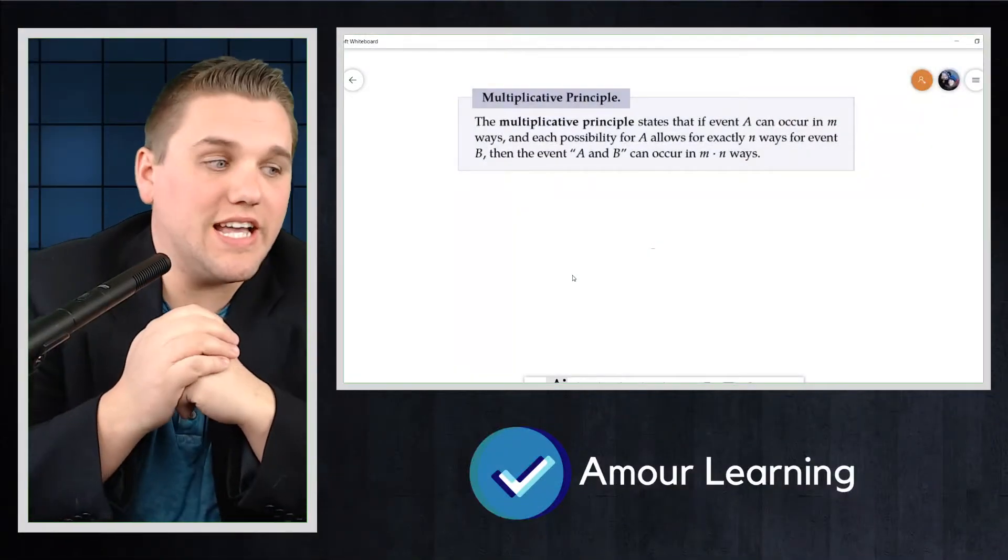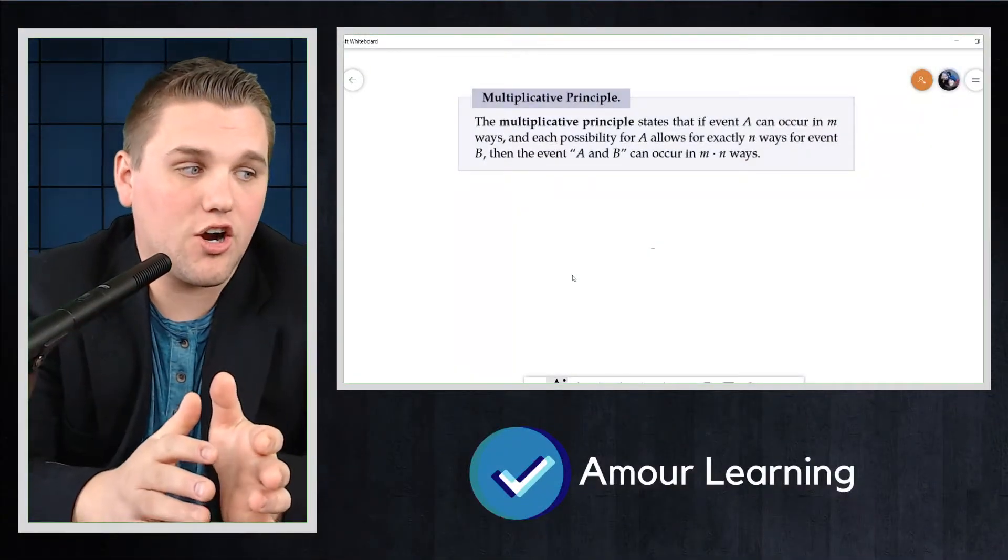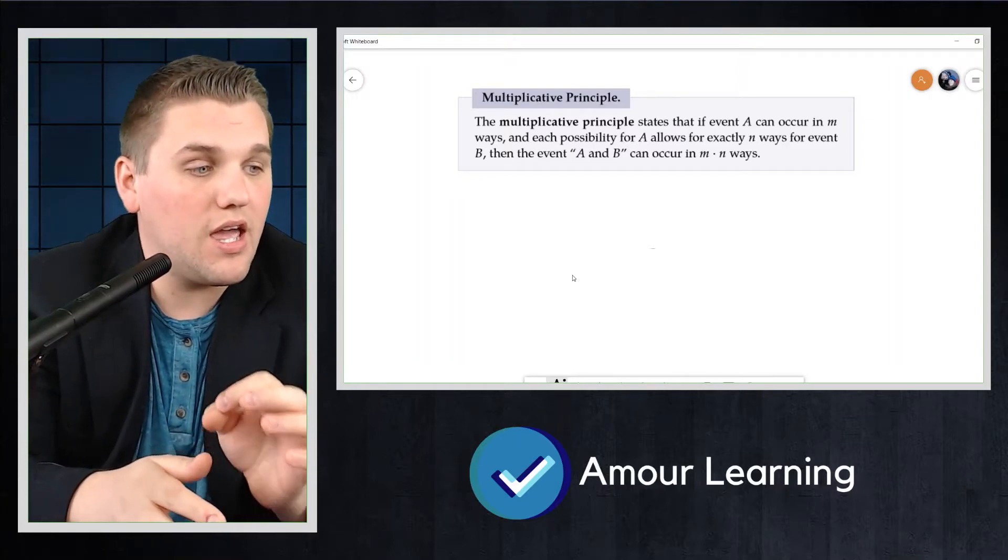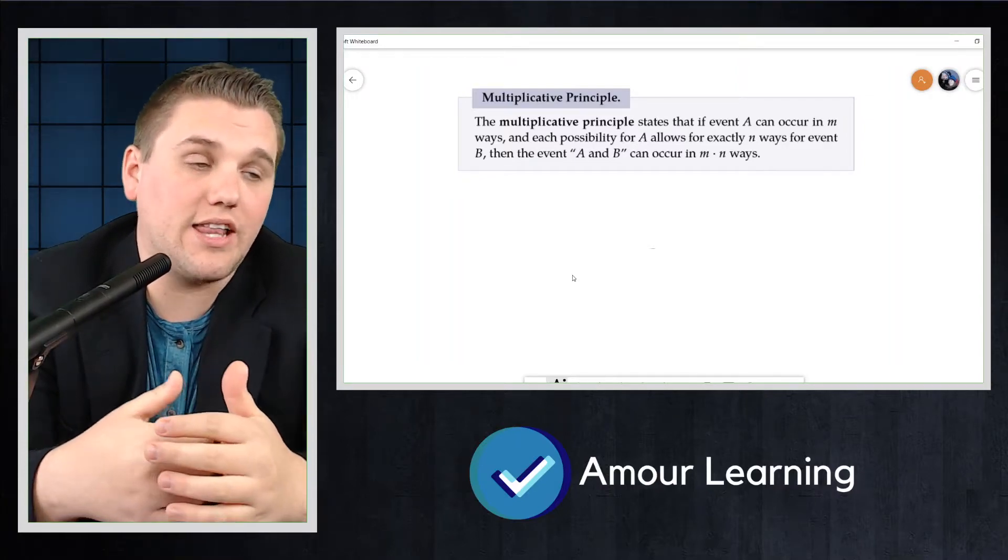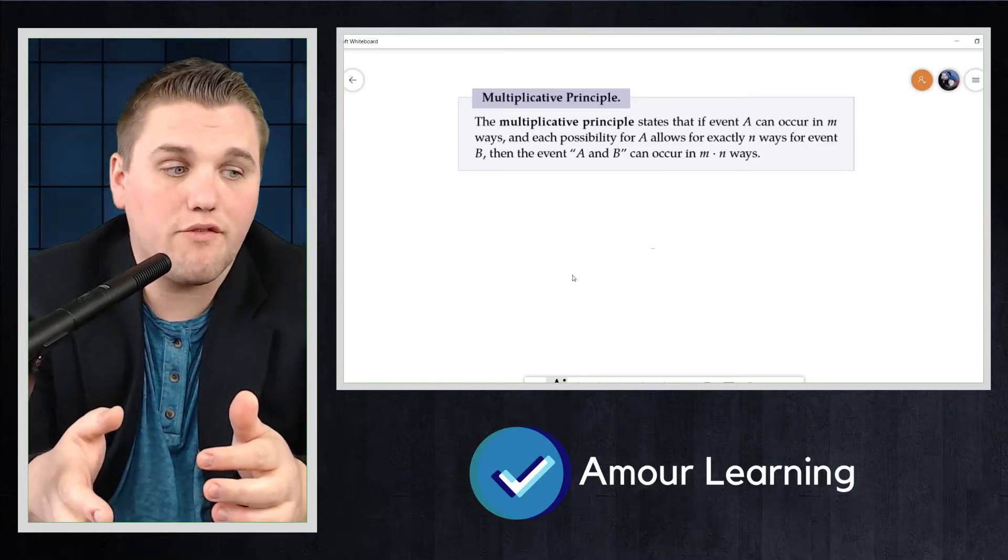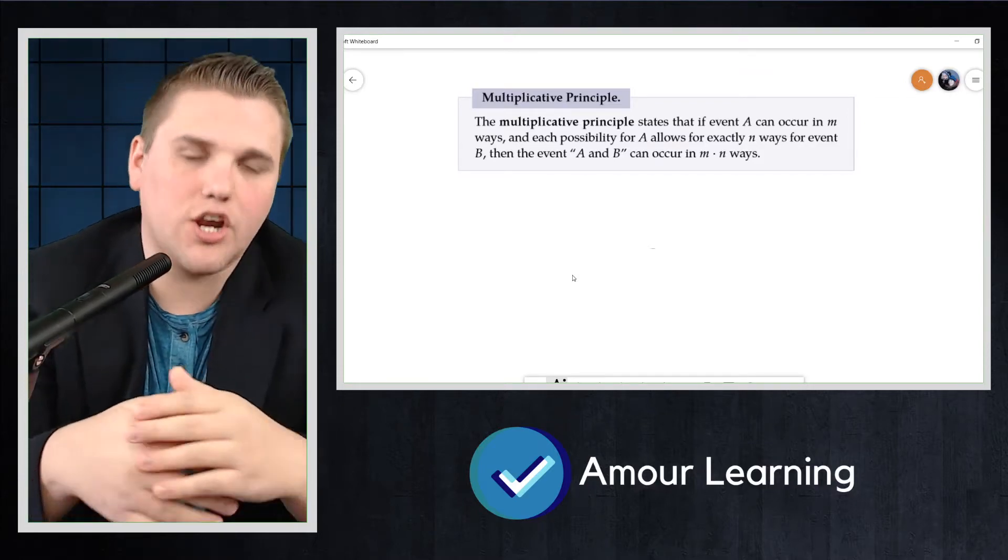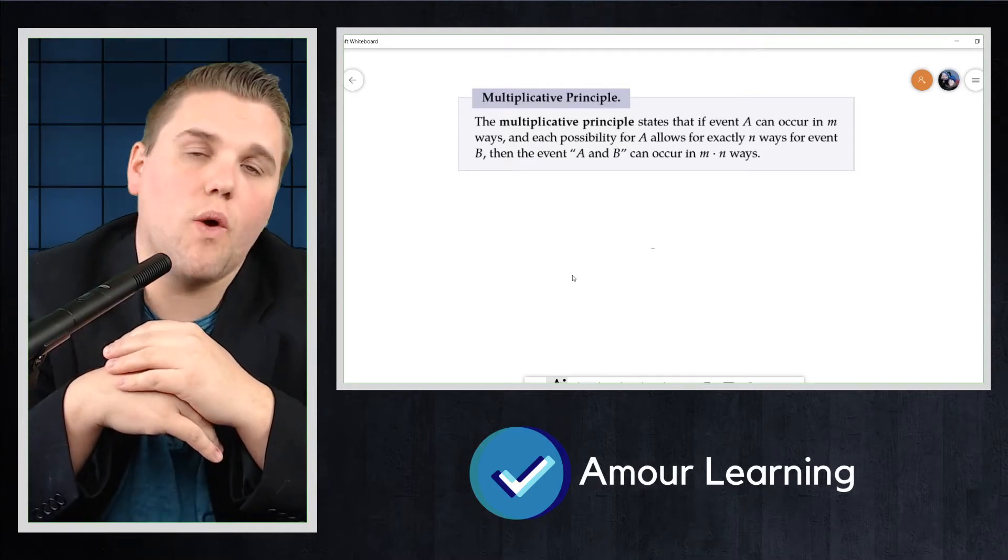The multiplicative principle states that if event A can occur in M ways and each possibility for A allows for exactly N ways for event B, then the event A and B can occur in M times N ways.